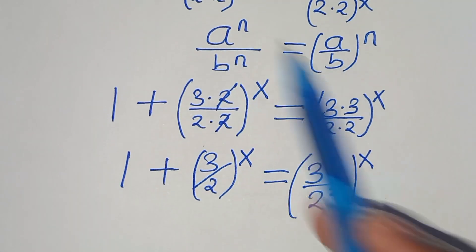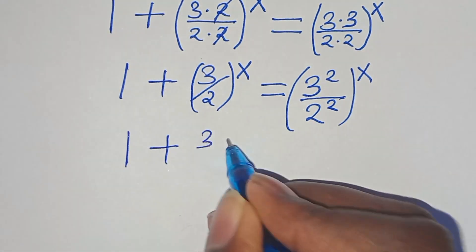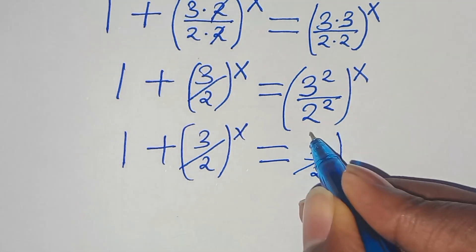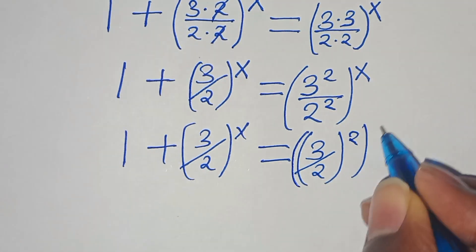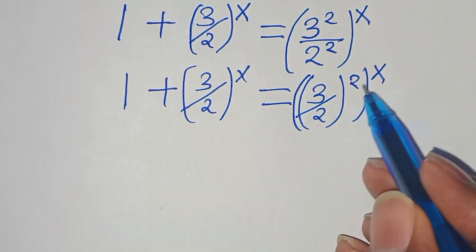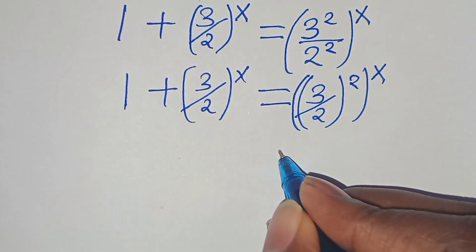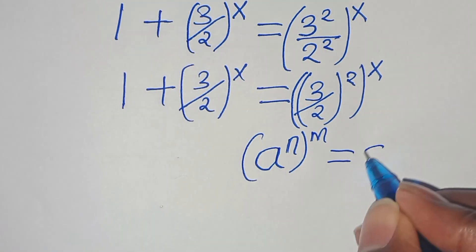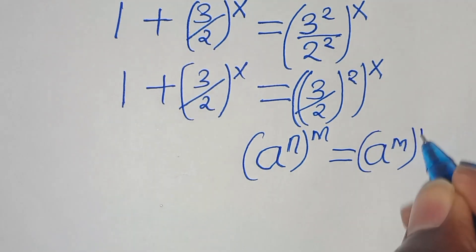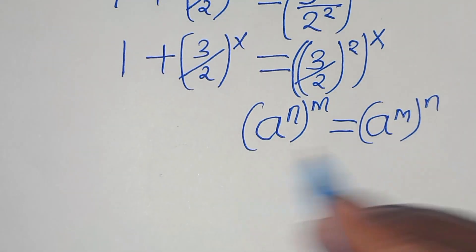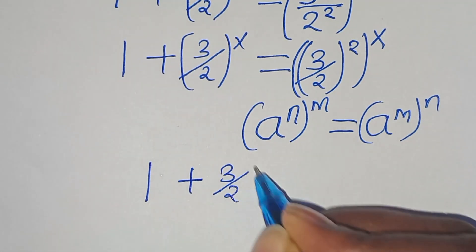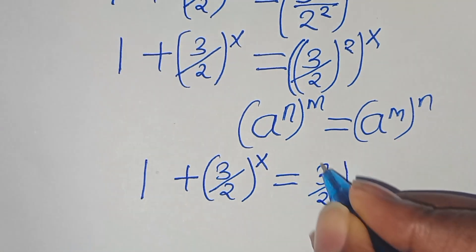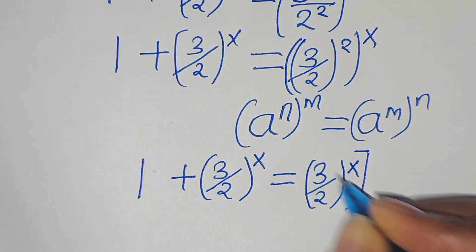Applying this property, we can express this as 1 plus (3 over 2) raised to the power of x, equals (3 over 2) raised to the power of x, then raised to the power of 2. This is in the form of a to the power of n, raised to the power of m, which can be expressed as a to the power of m, raised to the power of n. So applying this exponent property, we have 1 plus (3 over 2)^x equals (3 over 2)^x raised to the power of 2.